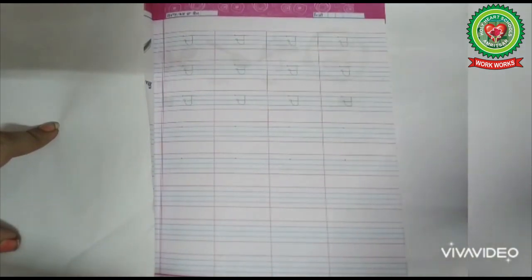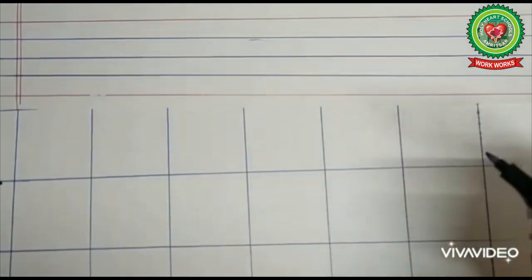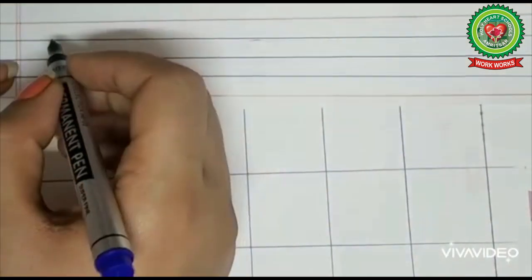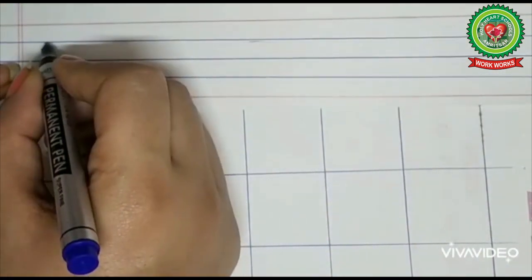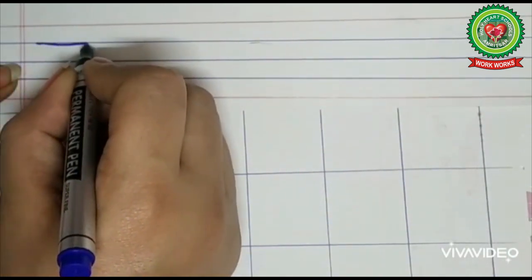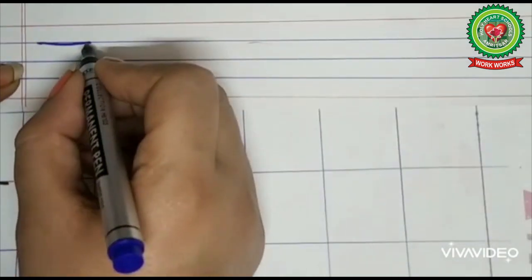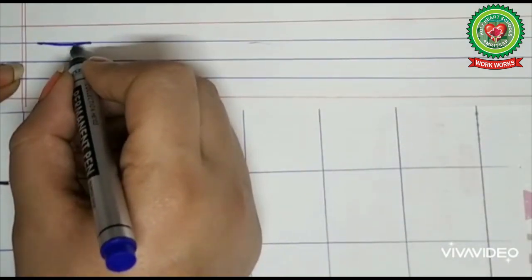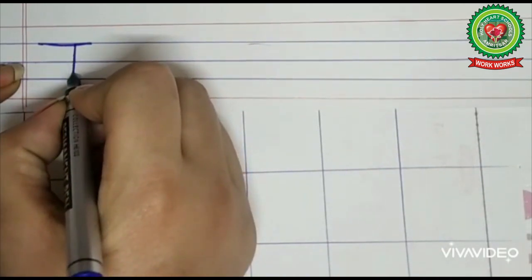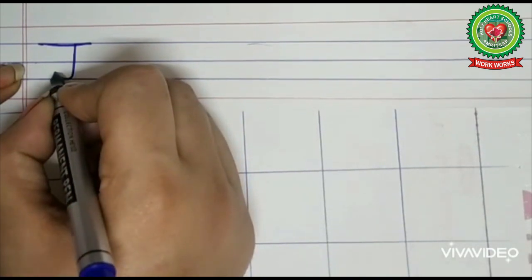For writing Chacha, our first step is to draw a sleeping line like this. Then after leaving some gap here, we will draw a standing line like this. And from there only we will take a curve like this.